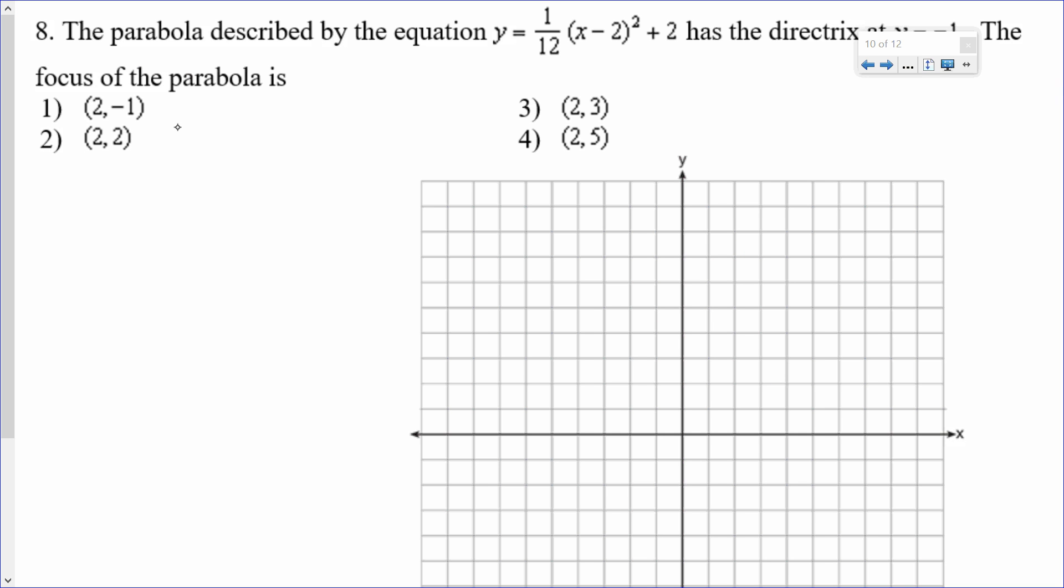It's giving me a parabola. It's giving me the directrix as y equals negative 1. And if it gives me the equation of the parabola, from there, I can pull the vertex. So, the vertex would be 2, 2.